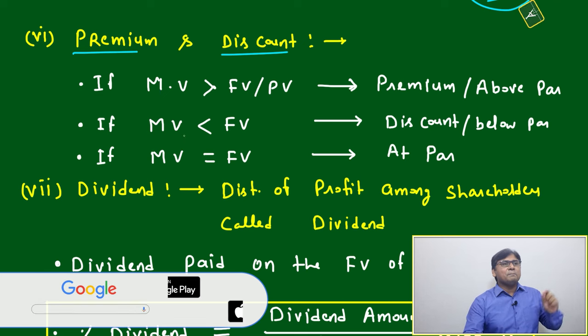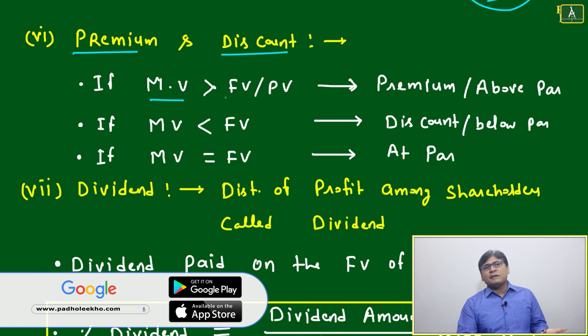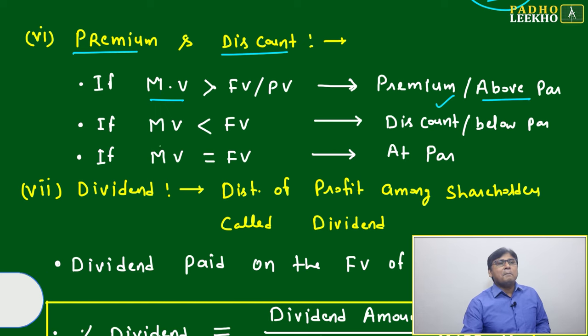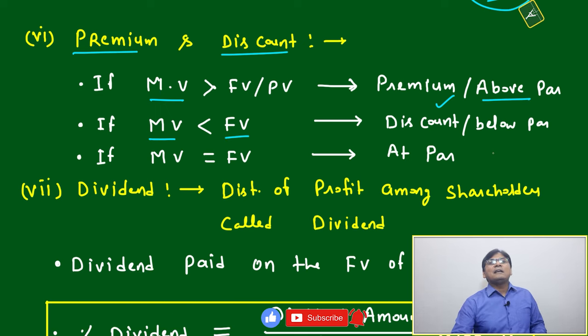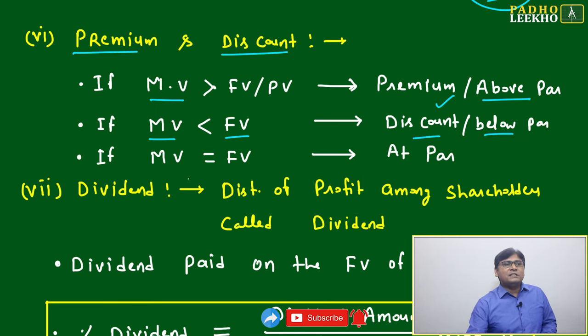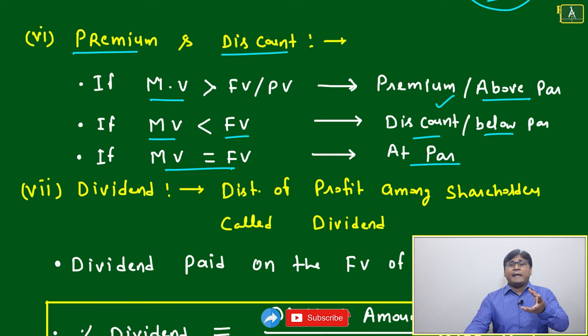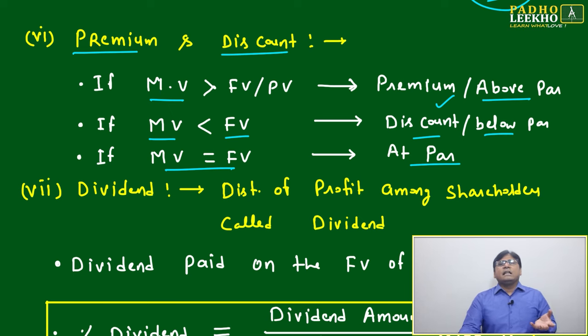If market value is less than face value, it is called a discount share or below par. If it is exactly equal, then it is at par. During launching time, for example, suppose any bank like SBI is selling 10% of their shares, or any PSU.